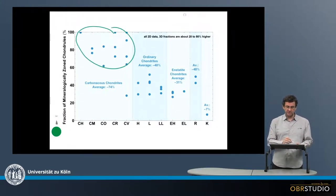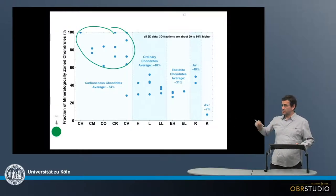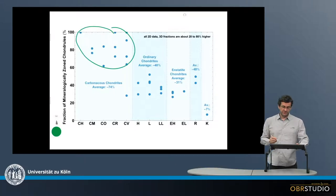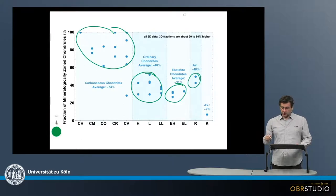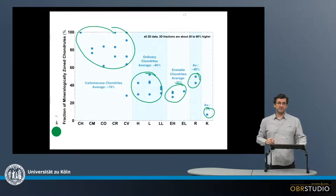For example, the carbonaceous chondrites have a large fraction of these zoned chondrules of about 75%. This is lower in the ordinary chondrites with 40% and enstatite at 31%. And R's have almost 50% while the K's only have about 7%.